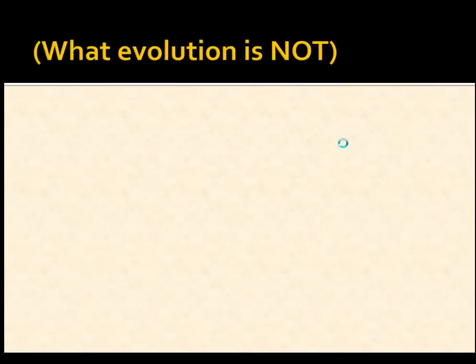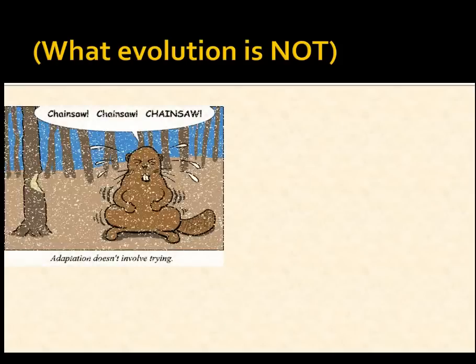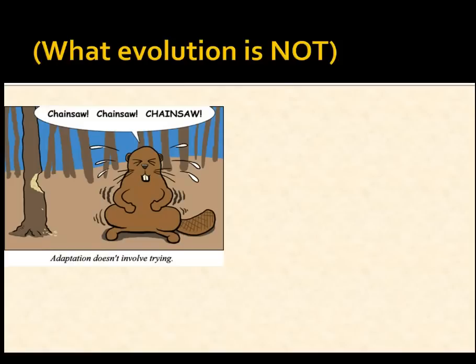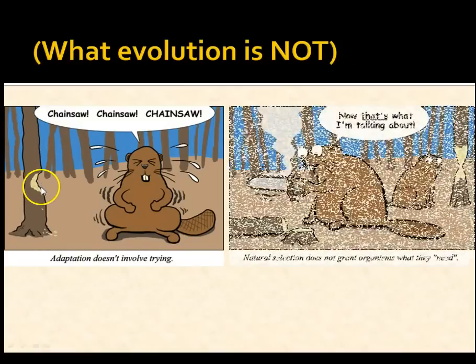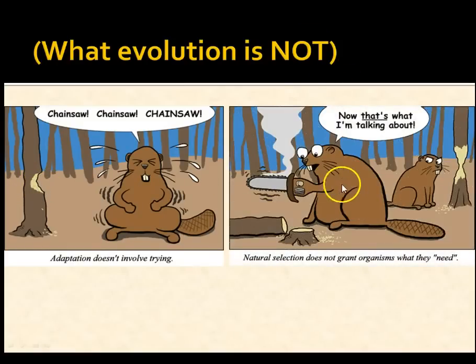Evolution is one of the most misunderstood concepts in biology. Evolution does not involve trying — beavers don't cut down trees by wishing for chainsaws. Natural selection doesn't give an animal what it needs; it only very gradually changes what an animal has over time, by allowing only those slight variations that help survival and reproduction to persist. Any that don't help get passed away.